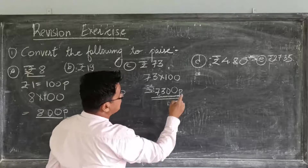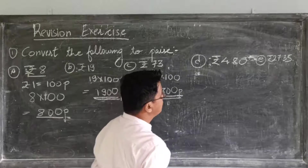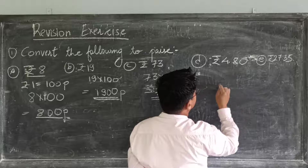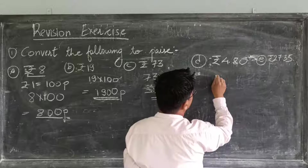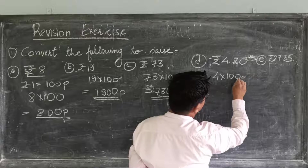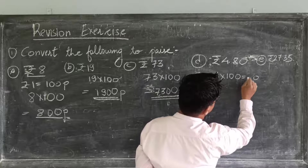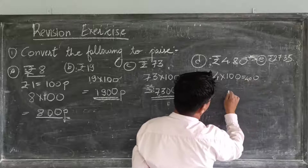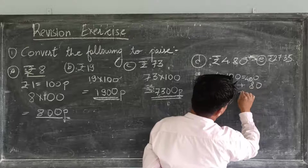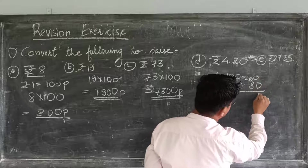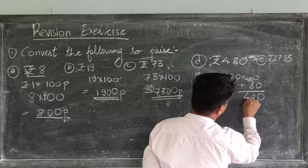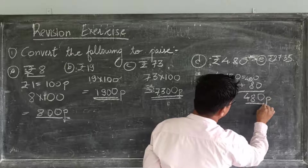Now, D. Rupees 4 and 80 paise. We know that 4 rupees into 100 is equal to 400. Then, 400 plus 80 paise. Adding: 0 plus 0 is 0, 0 plus 8 is 8, 4 plus 0 is 4. So the answer is 480 paise.